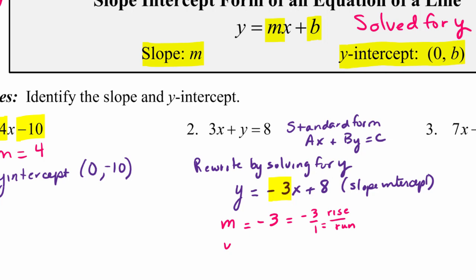And then our y-intercept as an ordered pair will be 0, 8, using that constant that you have in the slope-intercept form.